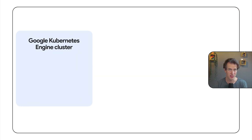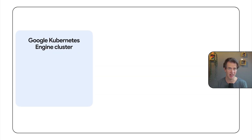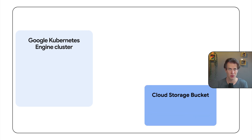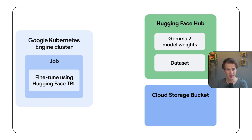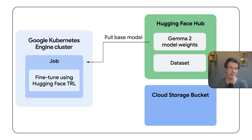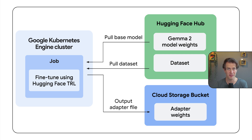Fine-tuning jobs can take a long time, so I won't be showing the whole thing in real time, but let me explain how all the pieces fit together. First, I created a GKE Autopilot cluster. Autopilot is recommended for most workloads. I also created a cloud storage bucket to store the results of the fine-tuning job. The job will first download the base model and then download the dataset to use for training. Finally, the end result of the fine-tuning job is a small file with the adapter weights, and it will write them to cloud storage.